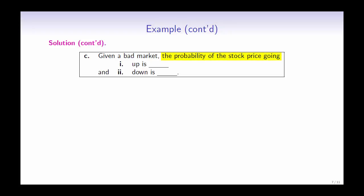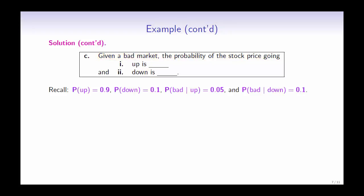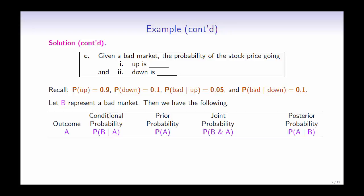For Part C, we will calculate the probability of the stock price going up and down given a bad market. Recall that P(up) = 0.9, P(down) = 0.1, P(bad market | up) = 0.05, and P(bad market | down) = 0.1. Let B represent a bad market. For each outcome A, we will use the Tableau approach to calculate the posterior probabilities.